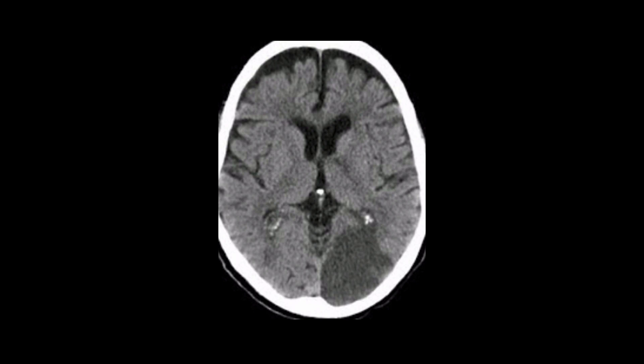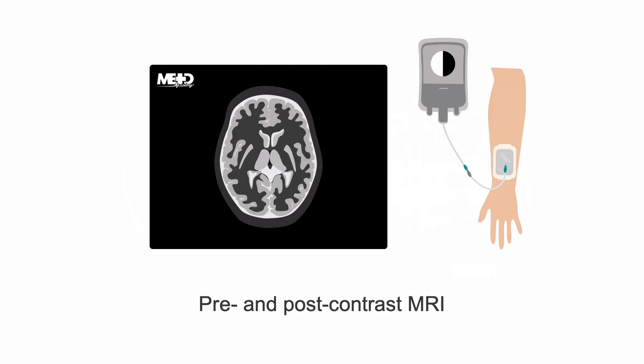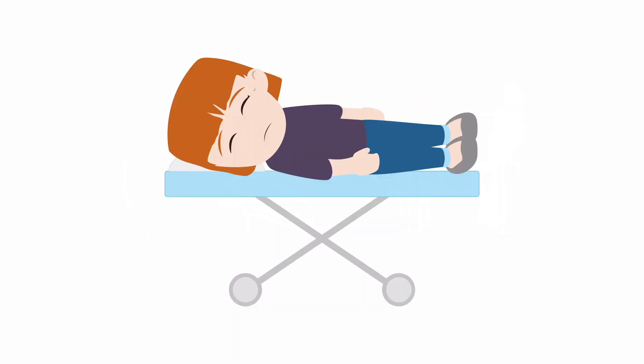A non-contrast CT scan of the brain should be obtained to rule out acute pathology — stop the seizures first, however. A pre- and post-contrast MRI of the brain should be obtained if one has not already been done during the admission.